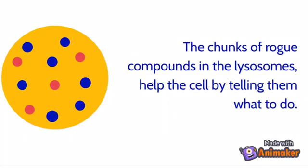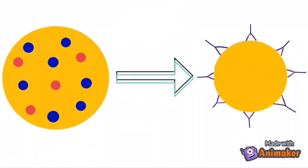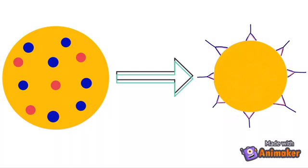The chunks of rogue compounds in lysosomes help the cell by telling them what to do. These chunks break down and become antigens. Antigens are a dangerous substance that enters your body, which causes the body to make antibodies as a response.